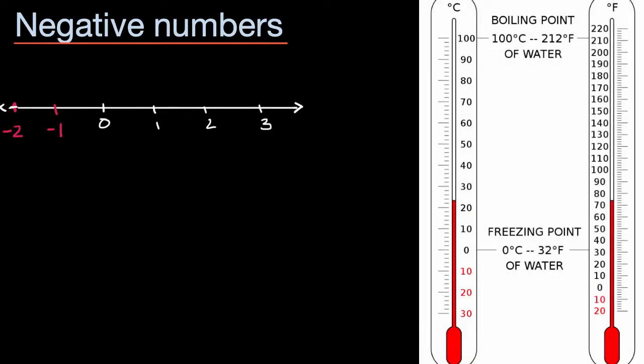and this has both a Celsius thermometer right over here and Fahrenheit, we know that you can get temperatures below zero degrees Celsius and temperatures below zero degrees Fahrenheit.